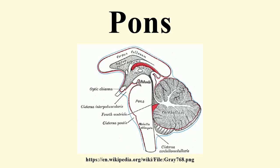Nucleus: A number of cranial nerve nuclei are present in the Pons — at mid-Pons, the chief or pontine nucleus of the trigeminal nerve sensory nucleus; at mid-Pons, the motor nucleus for the trigeminal nerve; lower down in the Pons, the abducens nucleus; lower down in the Pons, the facial nerve nucleus; and lower down in the Pons, the vestibulocochlear nuclei.